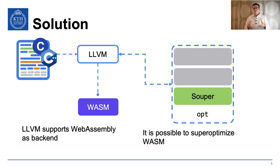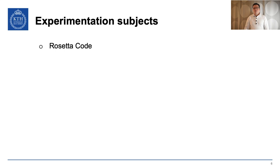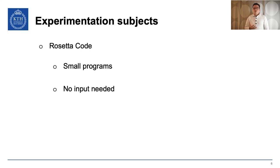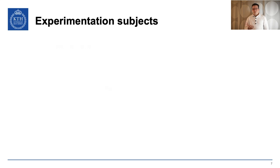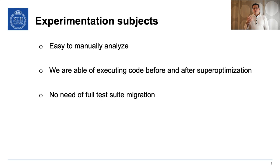Given a program, we can construct WebAssembly that is super-optimized. We wanted to test our pipeline and selected programs from Rosetta Code — a source code repository where all programs are solutions to common and simple problems. These programs are small and have none or only one input combination. This means we can manually analyze the code, and we are able to execute the program before and after the super-optimization stage. We also avoid the migration of a full test suite as with real-world code bases.